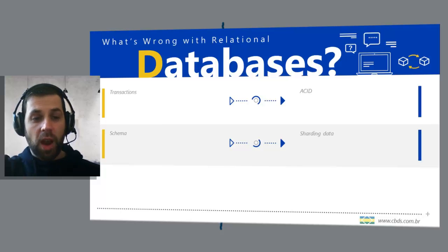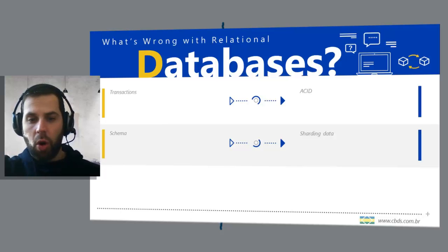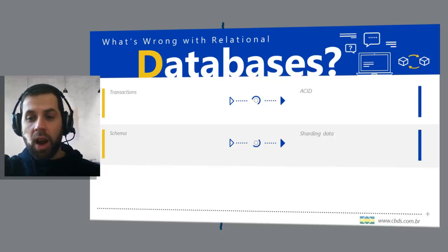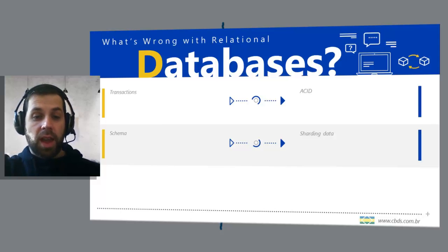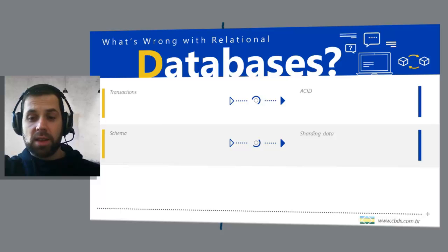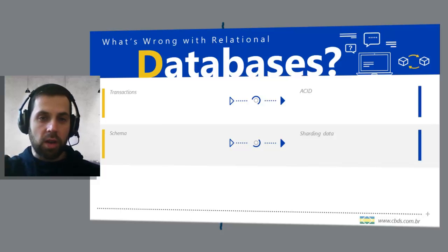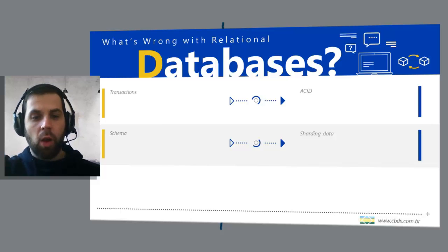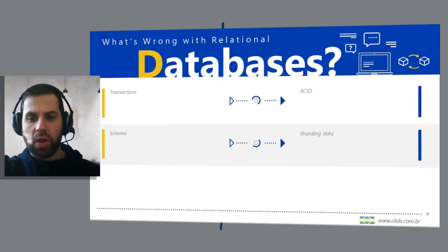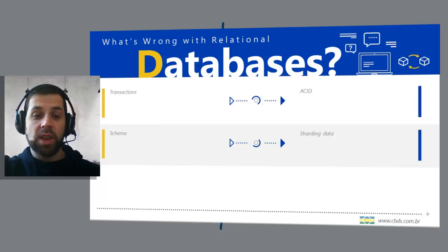Sharding data. Another way to attempt to scale a relational database is to introduce sharding to your architecture. This has been used to good effect at large websites such as eBay, which supports billions of SQL queries per day, and in other Web 2.0 applications. The idea is that you split the data so that instead of hosting all of it on a single server or replicating all of it on all servers in a cluster, you divide up portions of the data horizontally and host them each separately.